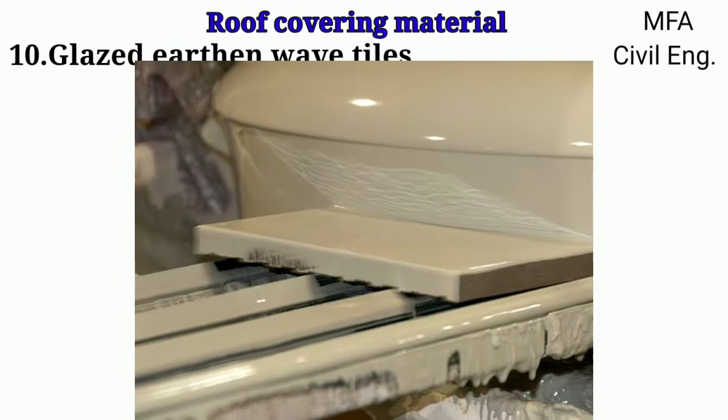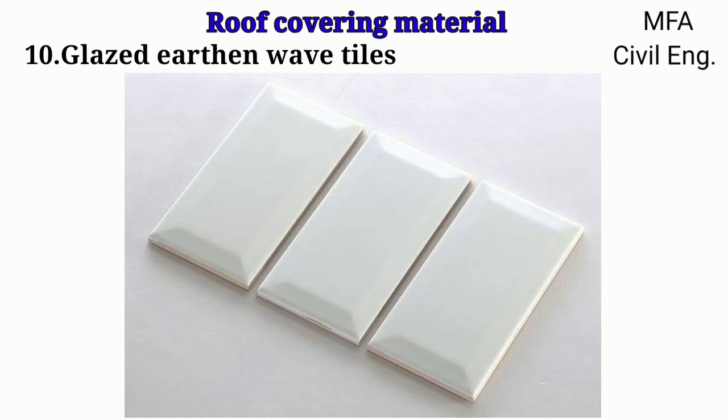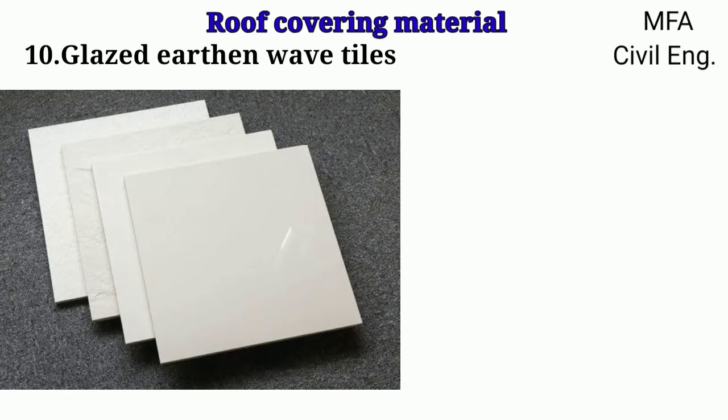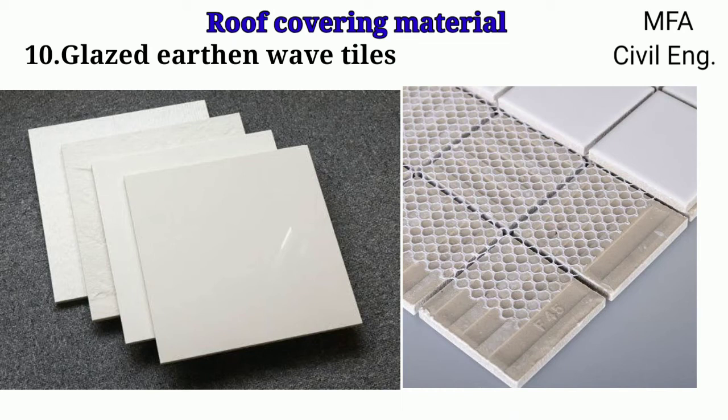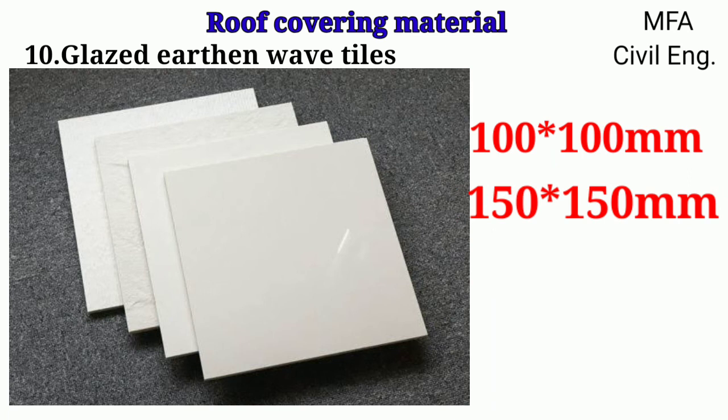Glazed earthen ware tiles are obtained after the glazing process. Glazing is a process of formation of a thin layer at the tile surface which becomes an integrated part of the tile, and because of this glazing, floors of kitchens, bathrooms, toilets and hospitals can be easily cleaned. The top thin layer of the tile surface is glazed and its under portion is unglazed, to facilitate fixing of the tile to the floor or wall. These tiles are available in two sizes: 100 by 100 mm and 150 by 150 mm, including a joint thickness of 1 mm.